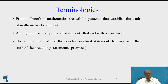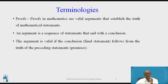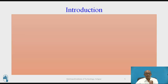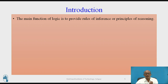What are the terminologies? Proofs in mathematics are valid arguments that establish the truth of mathematical statements. An argument is a sequence of statements that ends with a conclusion. The argument is valid if the conclusion follows from the given preceding statements, premises, or proofs. The main function of logic is to provide rules of inference or principles of reasoning.